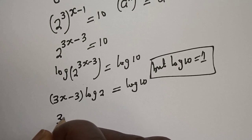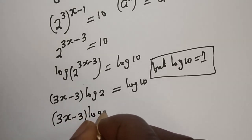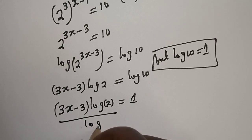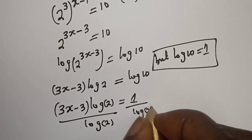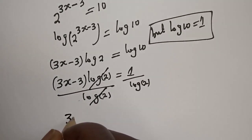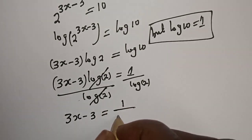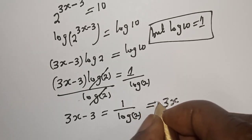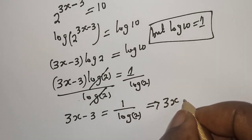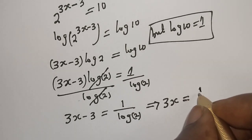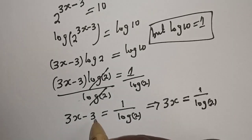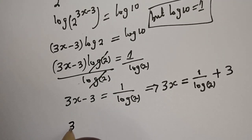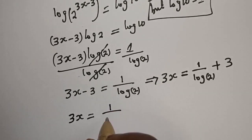And here 3s minus 3 times log 2 is equal to 1. Let's divide both sides by log 2. This cancels, giving us 3s minus 3 is equal to 1 over log 2. If we bring the minus 3 to the other side it becomes plus 3, so 3s is equal to 1 over log 2 plus 3.